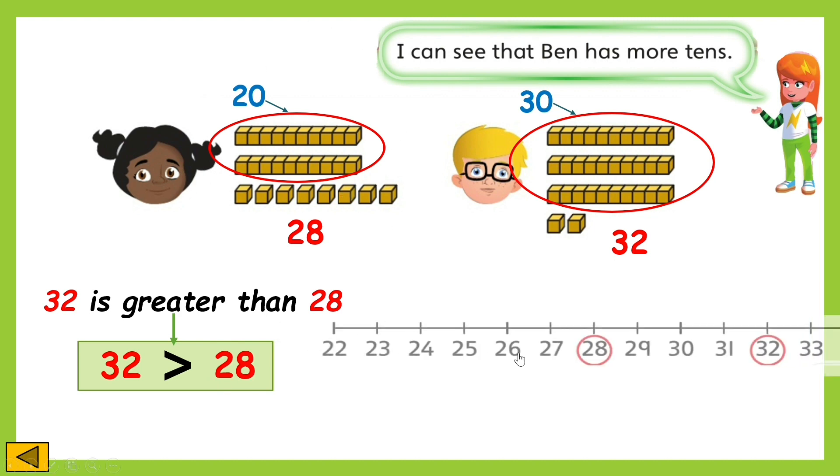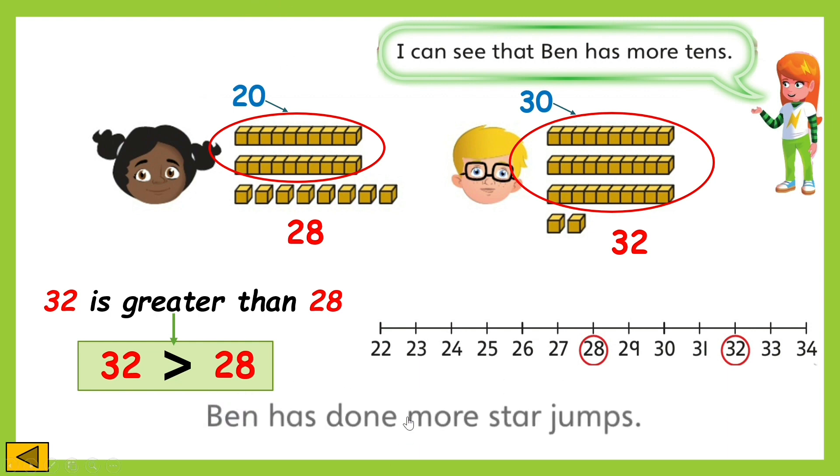You can also see in this number line that 32 comes after 28, and that shows that 32 is a bigger number. And to answer our first question, Ben has done more star jumps. Did you also get it right?